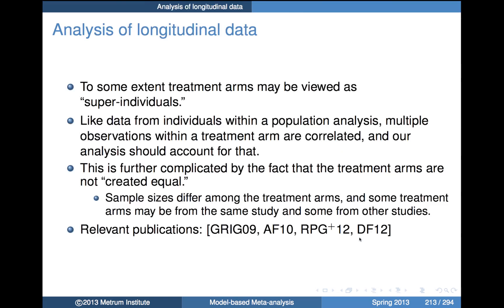ABC is conceptually attractive but hasn't been that promising in the small number of cases attempted so far. Basically, I've raised an issue without necessarily giving a solution right now. Let's talk about the analysis of longitudinal data, which is loosely related to the issue we just discussed. In spite of the issues raised about using individual-data models to describe summary data, that is essentially what we're still going to do.